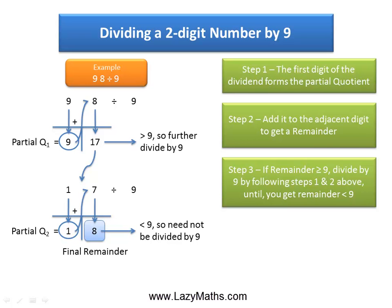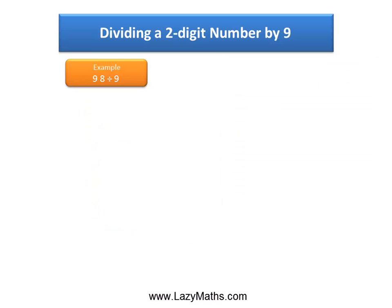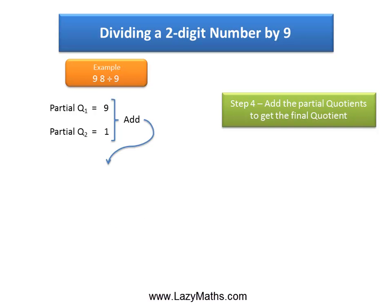We got the two quotients Q1 and Q2 as 9 and 1. We take those two, and we simply add them to get the final quotient as 10.